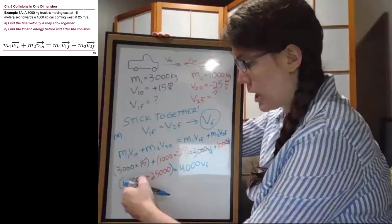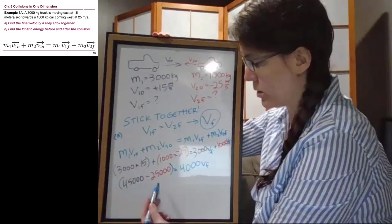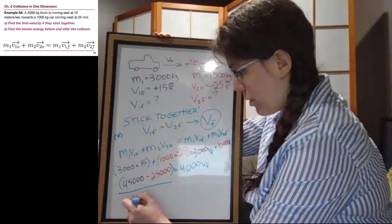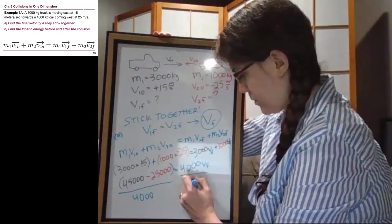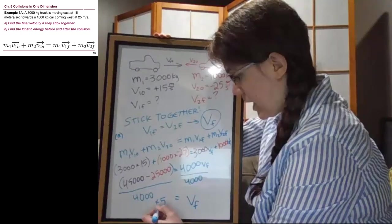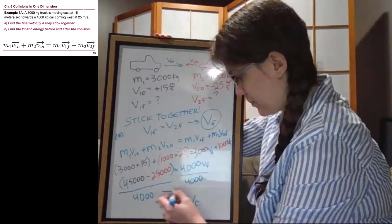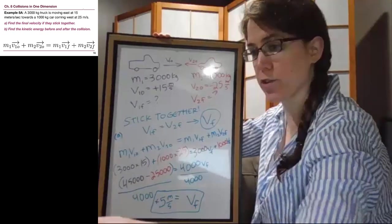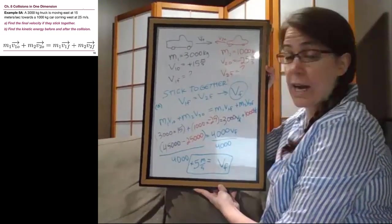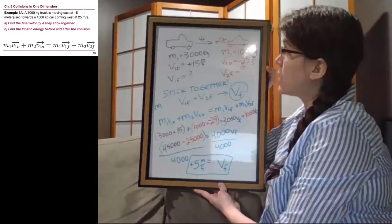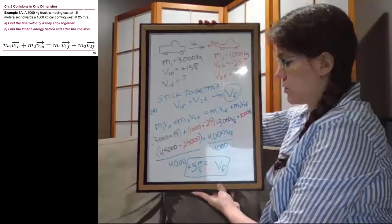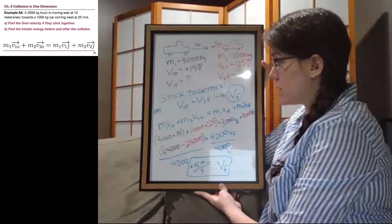Now if we take this whole left side, subtract 45,000 from 25,000, and divide both sides by 4,000, we get that the final velocity is positive 5 meters per second. So when this car and truck stick together, their final velocity is 5 meters per second in the positive direction, which means the combined mass moves to the right, to the east direction we chose as positive. That's the answer to part A.